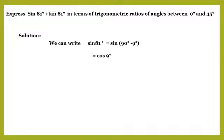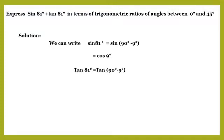Now, tan 81 degrees equals tan(90 degrees minus 9 degrees), since 90 minus 9 equals 81. But from trigonometric ratios of complementary angles, tan(90 degrees minus 9 degrees) is equal to cot 9 degrees.